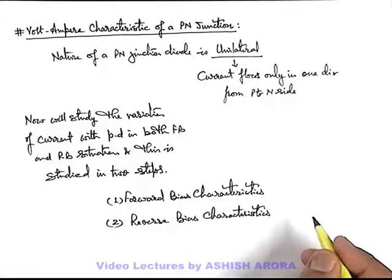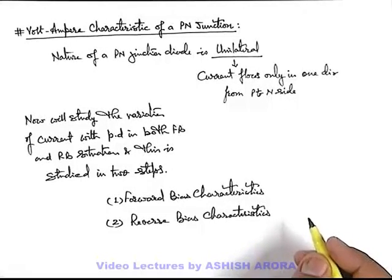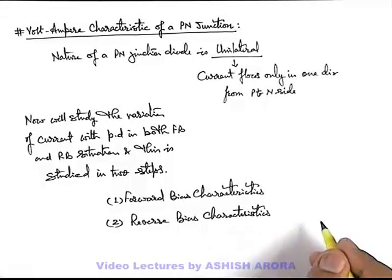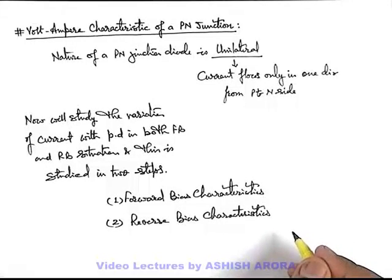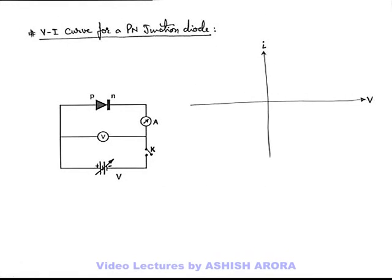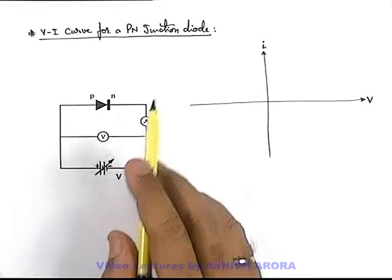Let's study both of these simultaneously and we plot a curve of variation of current with change in potential difference applied across a PN junction. Let's plot the V-I curve for PN junction diode.